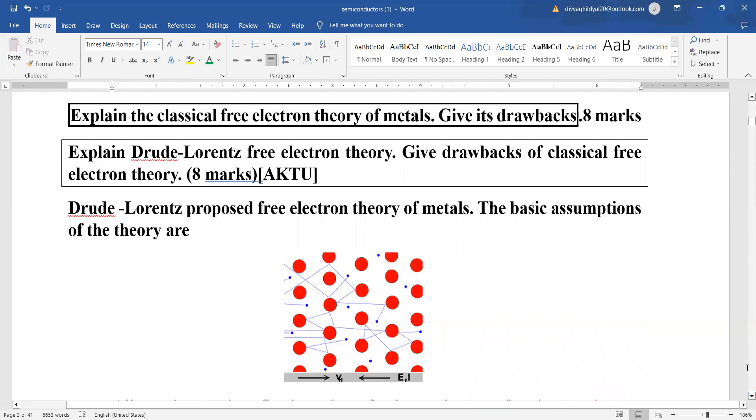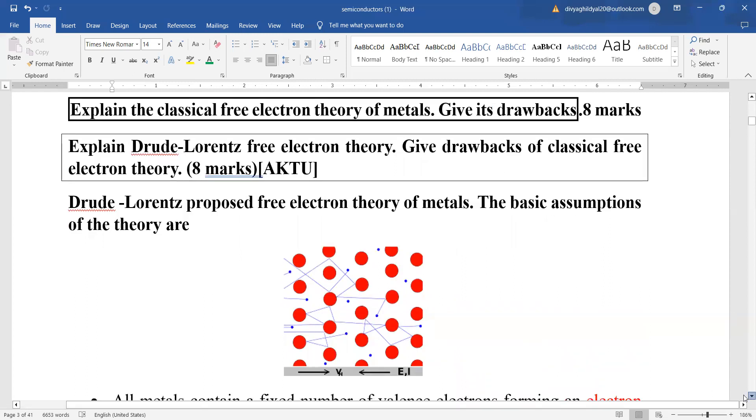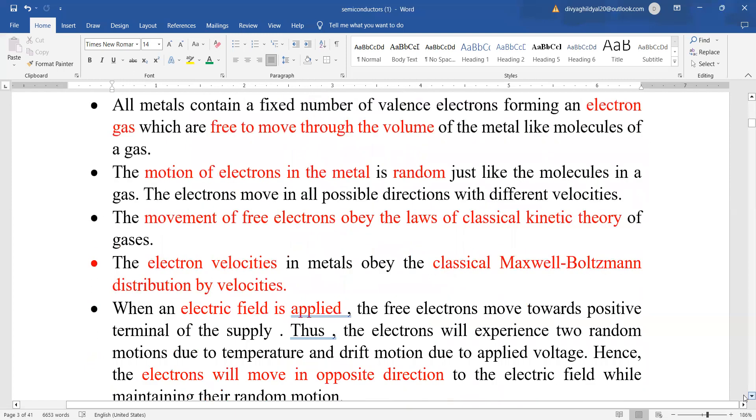This free electron theory. The very basic assumption for explaining this theory was that all metals contain a fixed number of valence electrons forming an electron gas, which is free to move throughout the volume of metal. The motion of electrons in the metal is random. The movement of these free electrons obeys the laws of classical kinetic theory of gases.